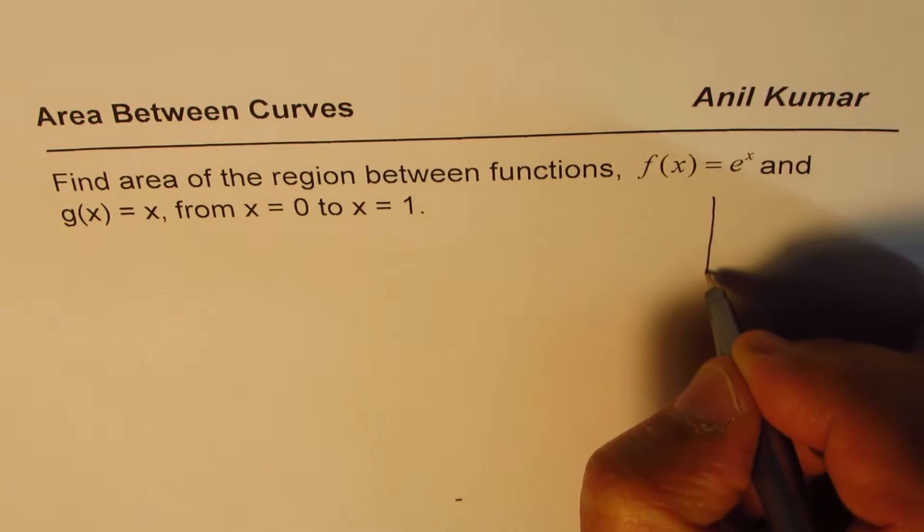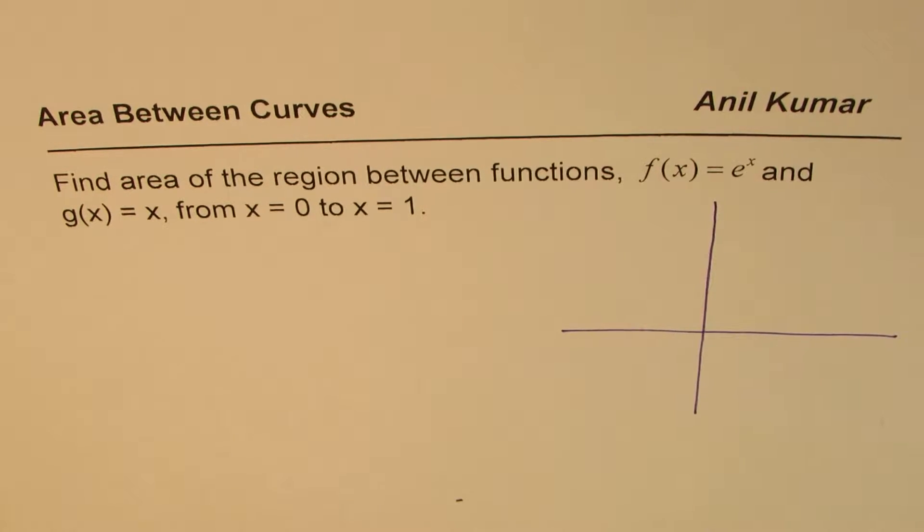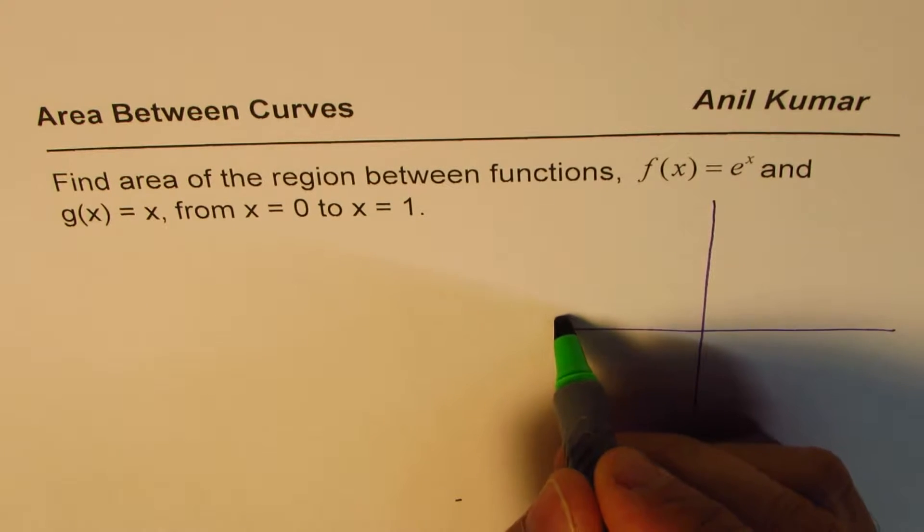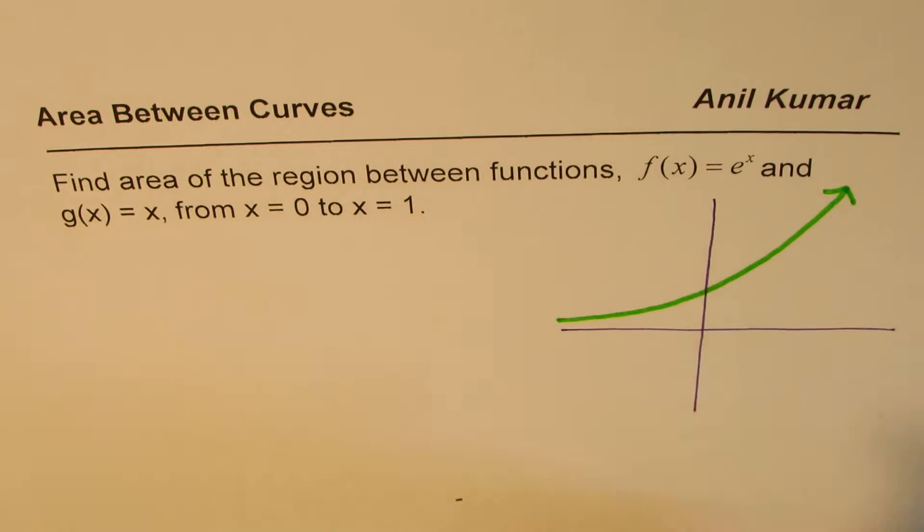So let us first sketch this function. e to the power of x is always positive, an exponential function, which is going to go like this. So this is e to the power of x.